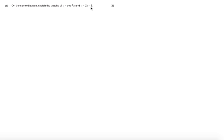y equals 5x minus 1 is a straightforward linear graph to sketch, however y equals cos to the minus 1 of x is a little bit more challenging. So to approach this I'm going to start off just by sketching the graph y equals cos of x. What I'll do is I'll just give myself a little bit more space.